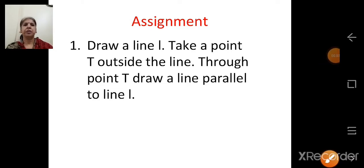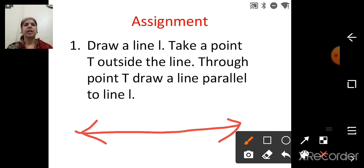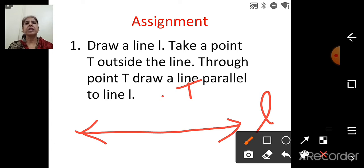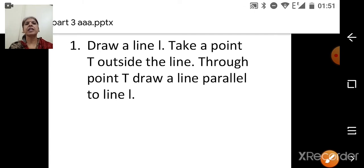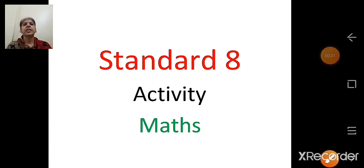This is an assignment for you. Question: draw a line L, take a point T outside the line, and through point T draw a line parallel to line L. This construction is similar to the first one using set squares. Draw line L, mark point T outside it, then use set squares as demonstrated to draw a line parallel to line L. We have now completed Chapter 2, Parallel Lines and Transversal.